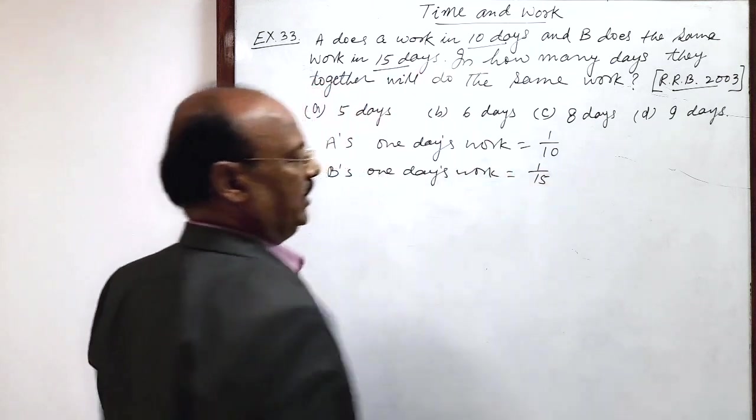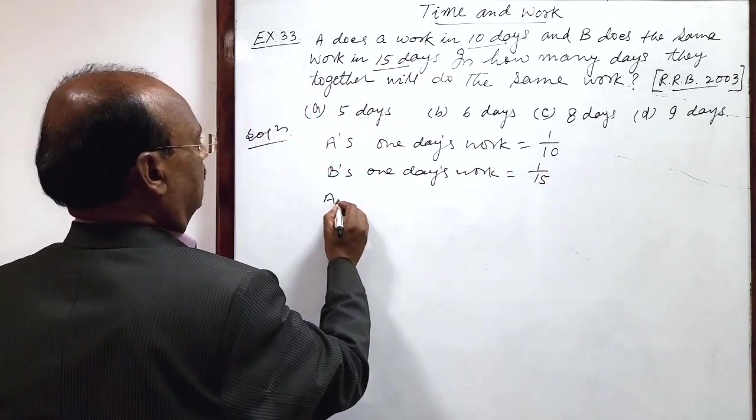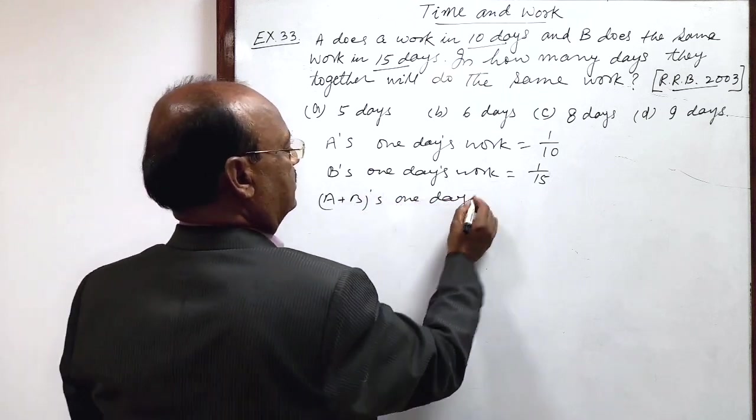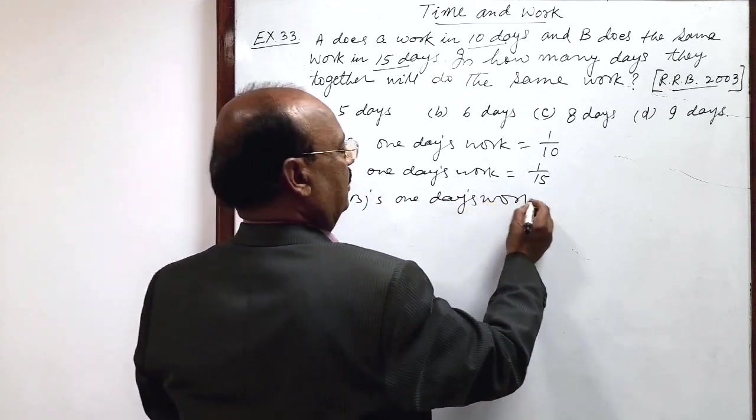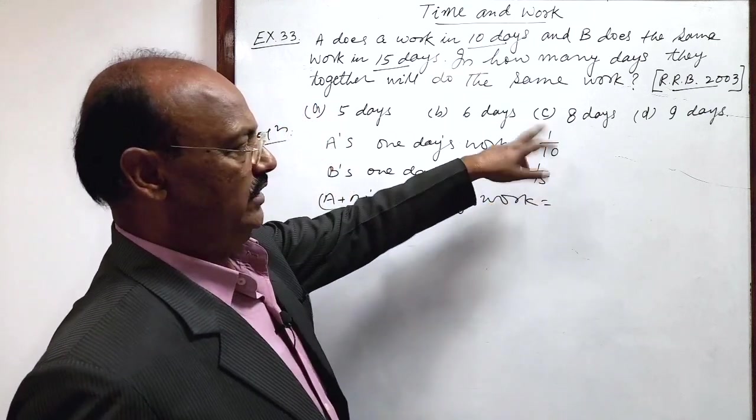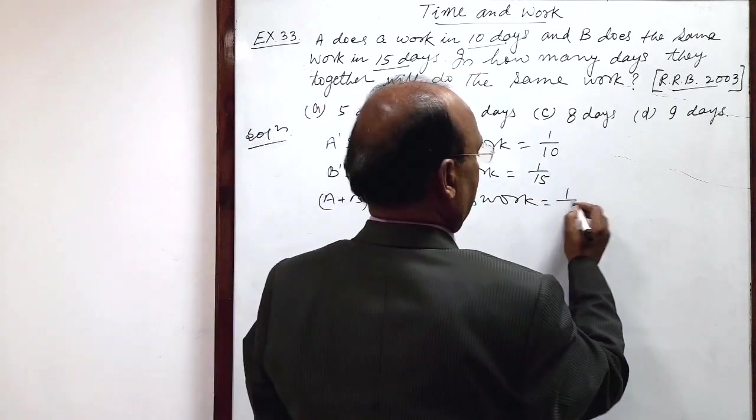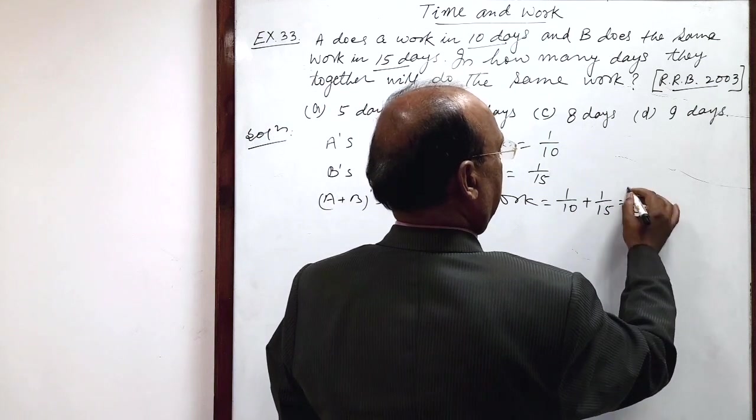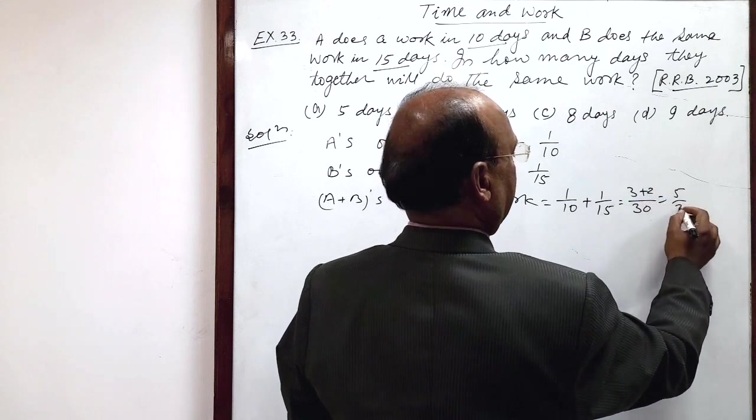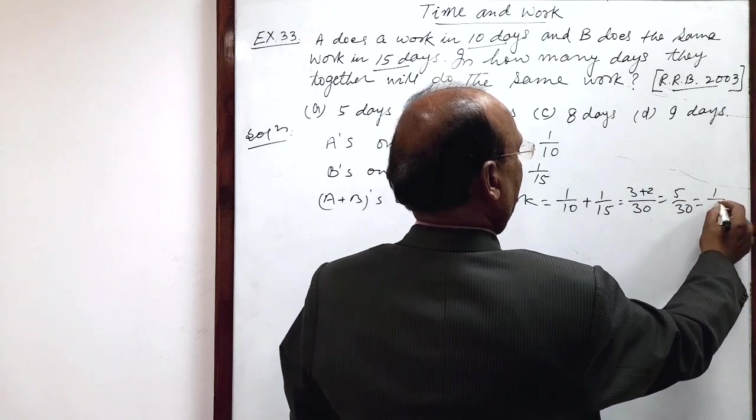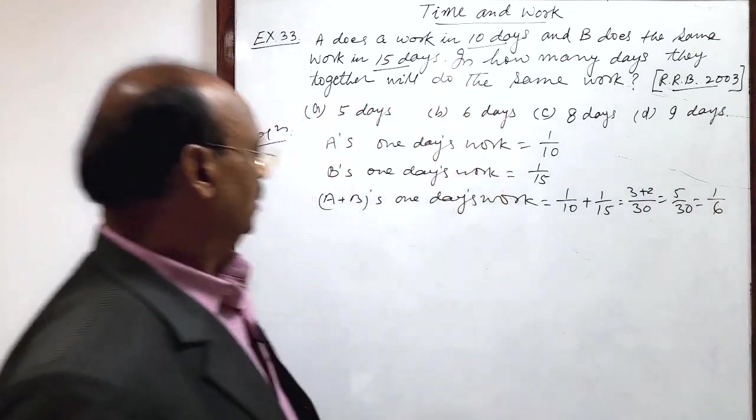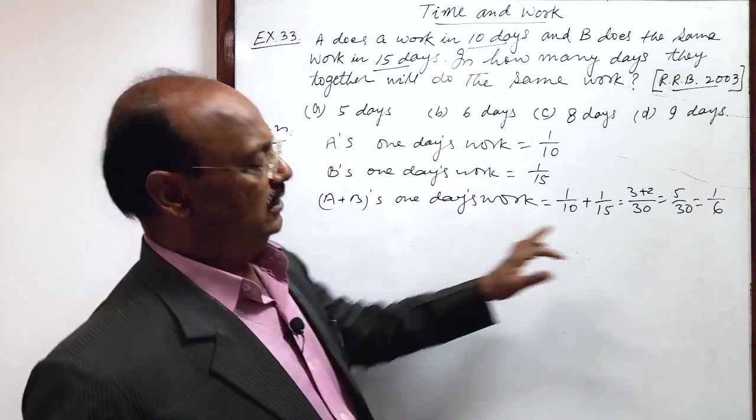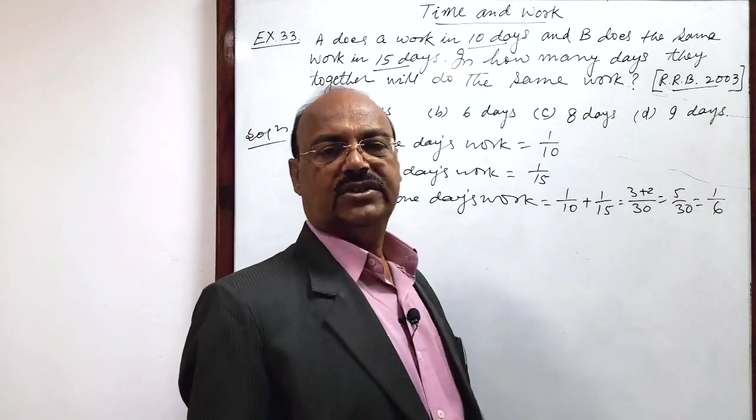This is 1 by 15, and A plus B's one day's work will be how much? We will add these two quantities together. This is 1 by 10 plus 1 by 15. LCM is 30, 3 plus 2, this is 5 by 30, this is equal to 1 by 6. When A and B are working together, then in one day they are doing 1 by 6th part of this job.